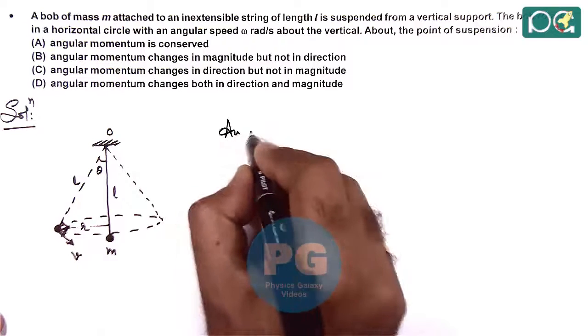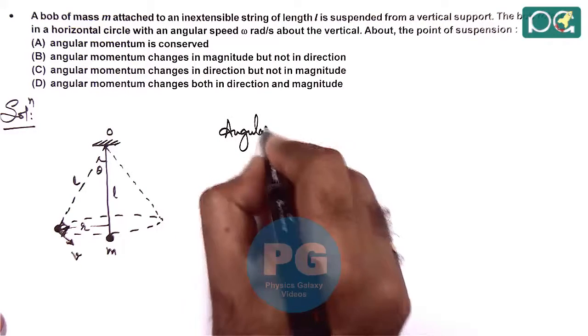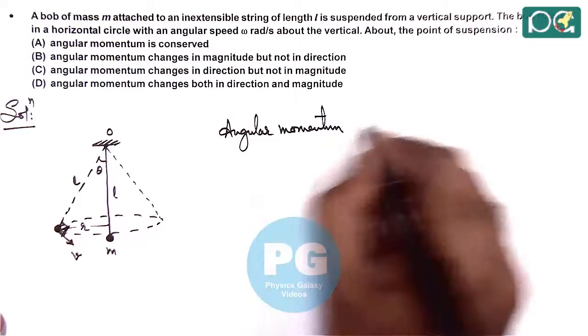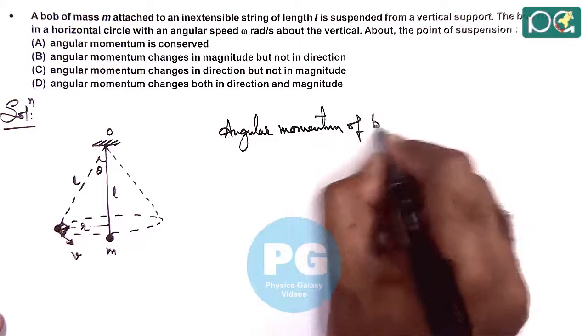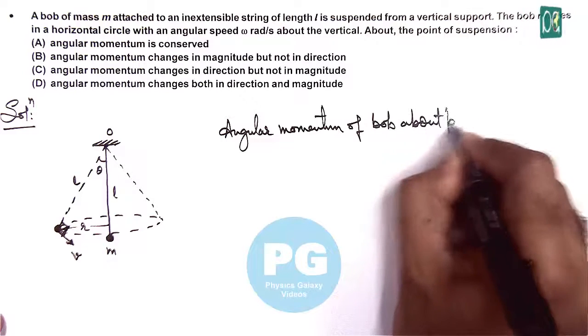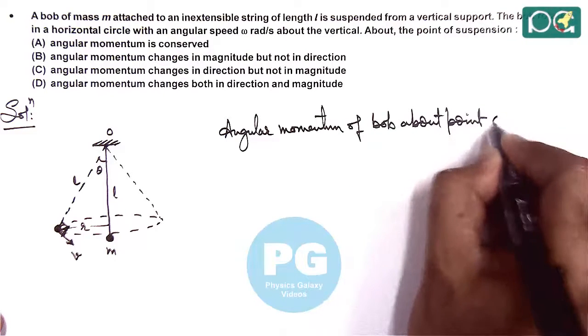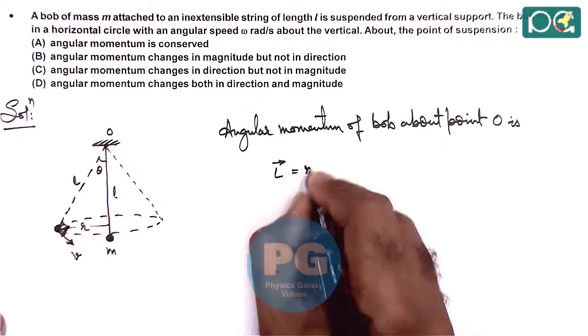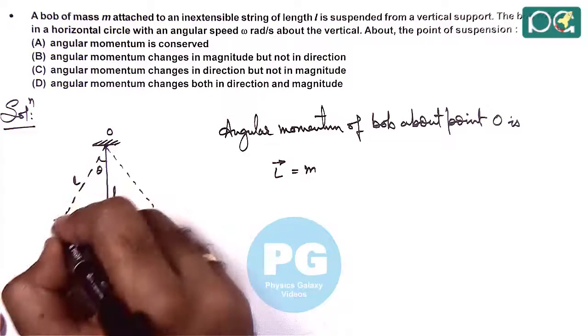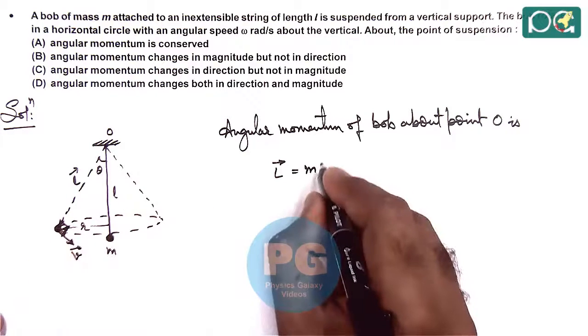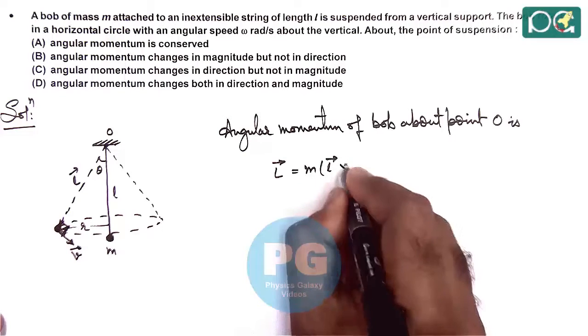So here we can see angular momentum of bob about point O is: angular momentum vector L equals M times, here if this position vector L and this velocity vector V, we write M times L cross V.